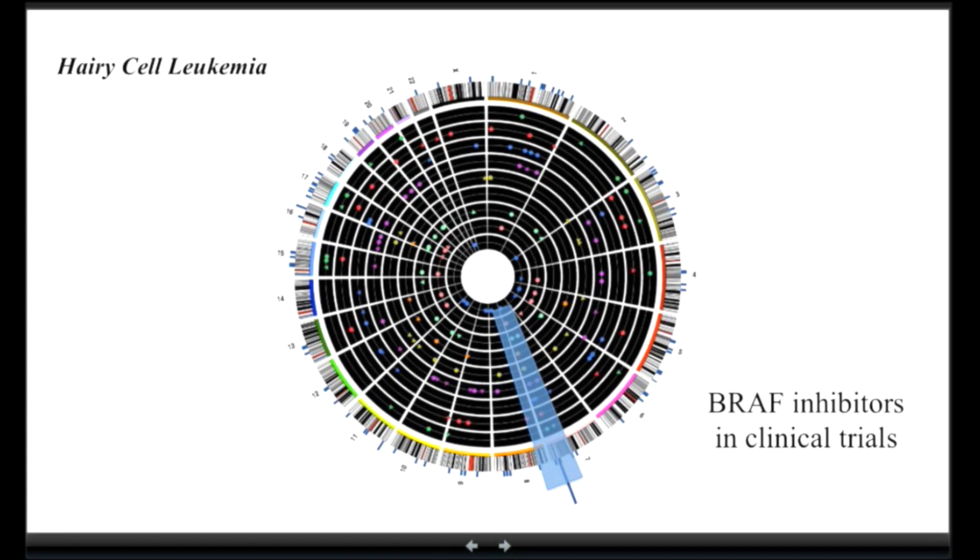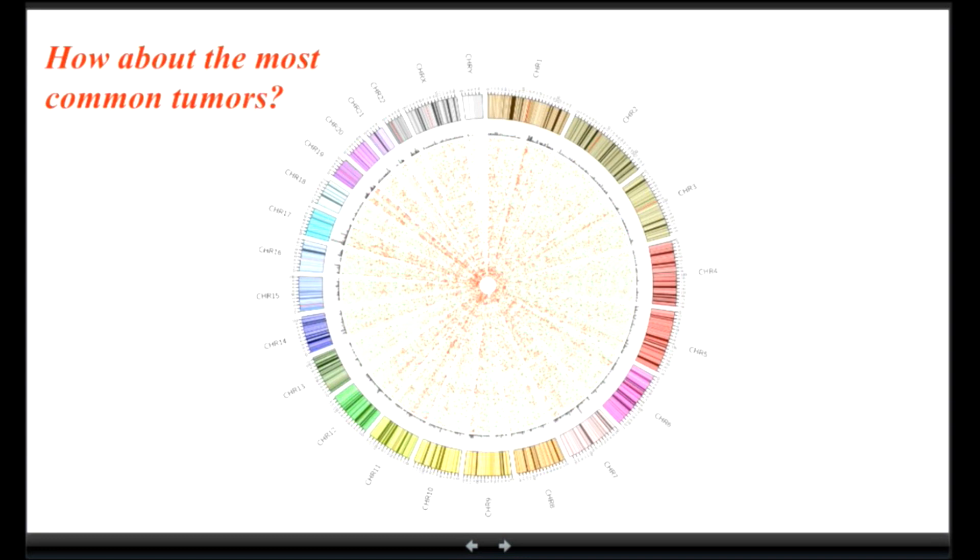So now what happens when we go to other tumors? So the story is much more complex. These are 150 patients of glioblastoma. This is a very deadly brain tumor, one of the most common ones. And then now there are many circles, so there is 150 circles here. This is why you cannot distinguish by eye each of the patients.